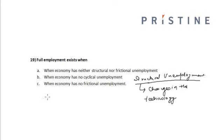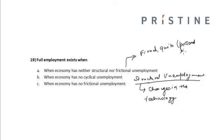Frictional unemployment occurs when employees quit their job to seek other opportunities or are fired from a company — not because of a change in the business cycle, but because of personal reasons. It has nothing to do with changes in technology or the state of the business cycle.